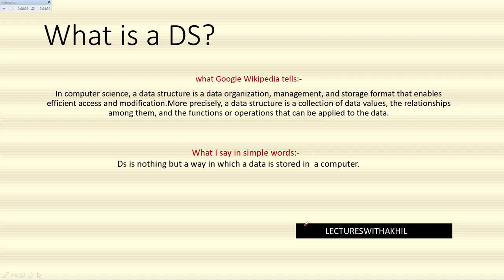Coming to what is a data structure: In computer science, a data structure is a data organization, management, and storage format that enables efficient access and modification. More precisely, it's a collection of data values, the relationships among them, and the functions or operations that can be applied to the data.